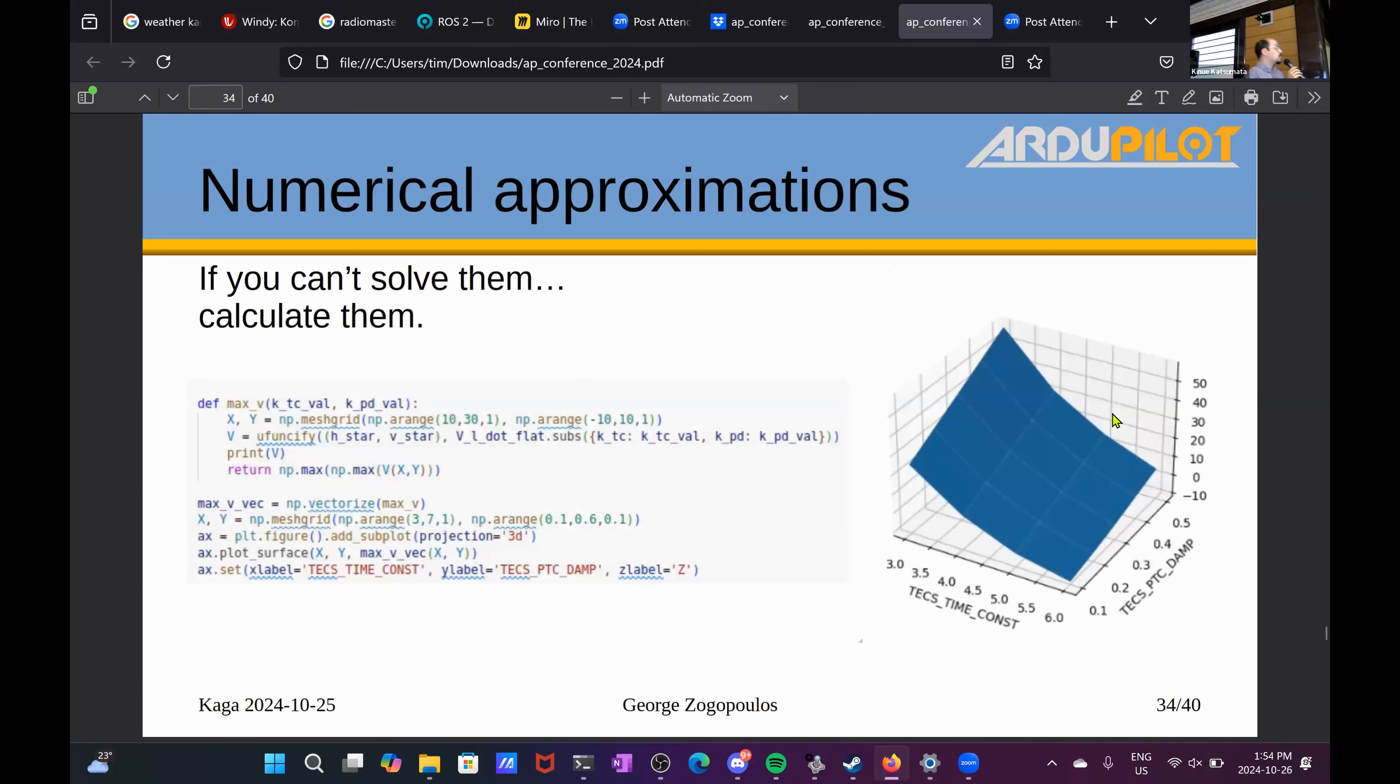So if you can't solve an expression, just calculate it, but you do lose the flexibility. The moment you replace with numbers, you can get your analysis all the way to the end, but you have lost a lot of insight. In this case, what I tried to do was to keep a two-dimensional system and keep two variables free, basically. The TECS time constant on one axis and the TECS pitch damp gain on the other axis.